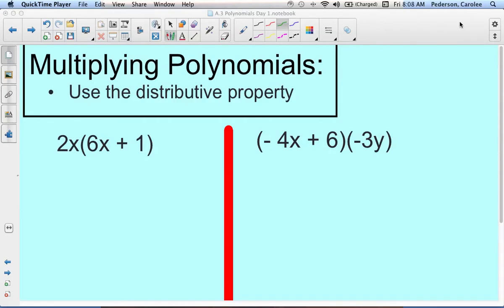Here are some examples on multiplying polynomials. These first two examples we're going to use the distributive property. So we have a monomial times a binomial.